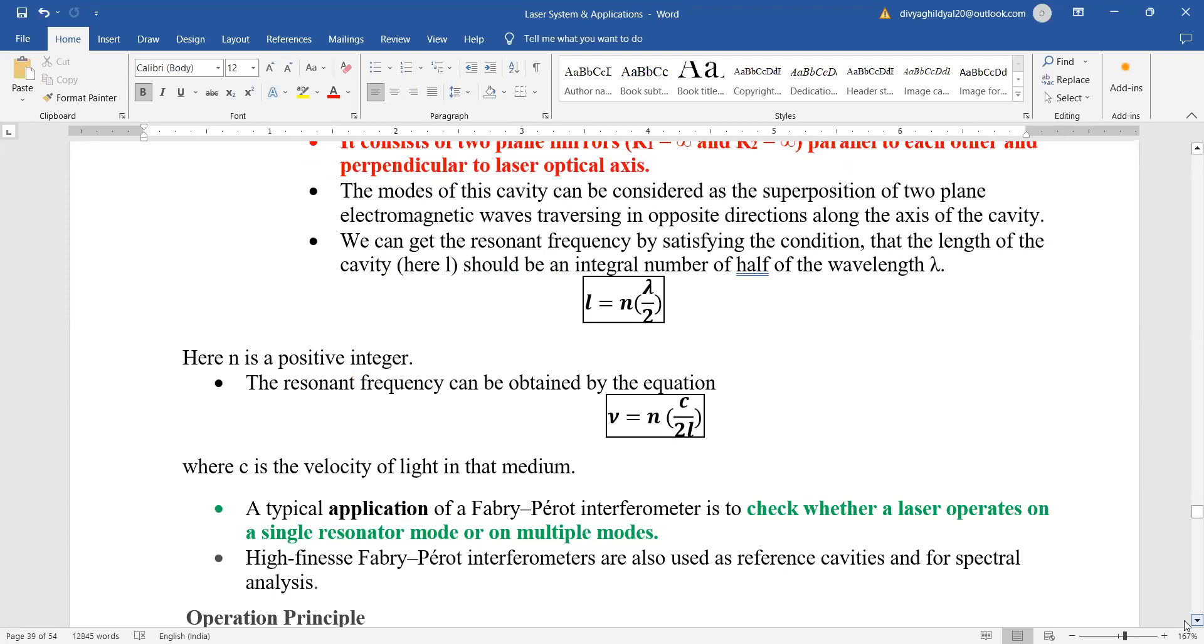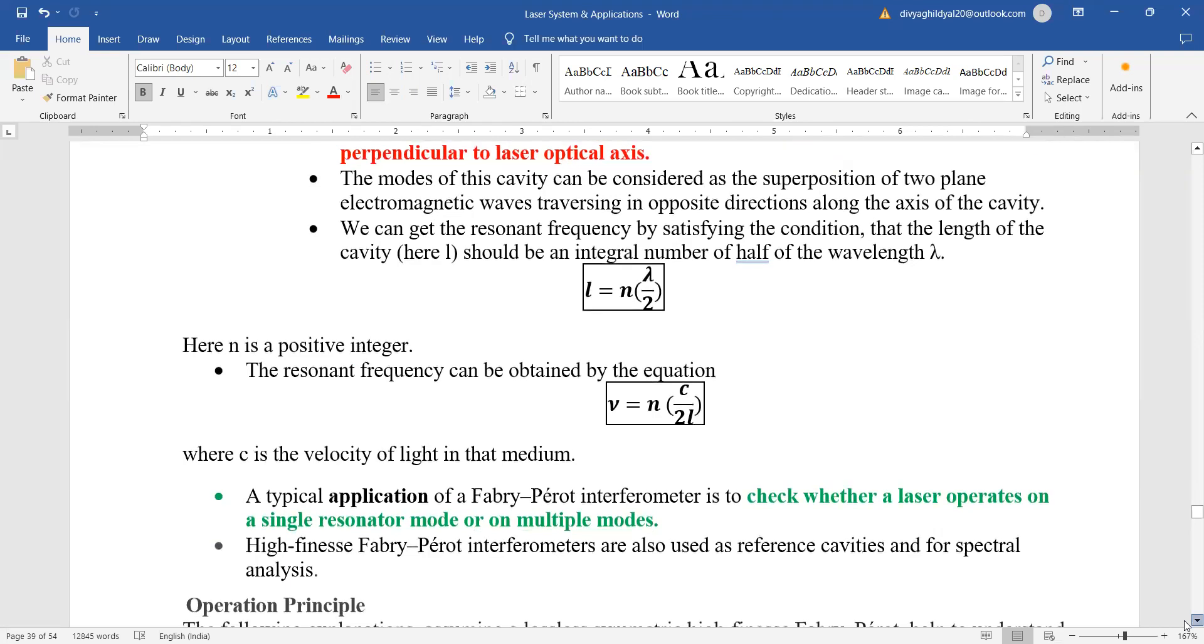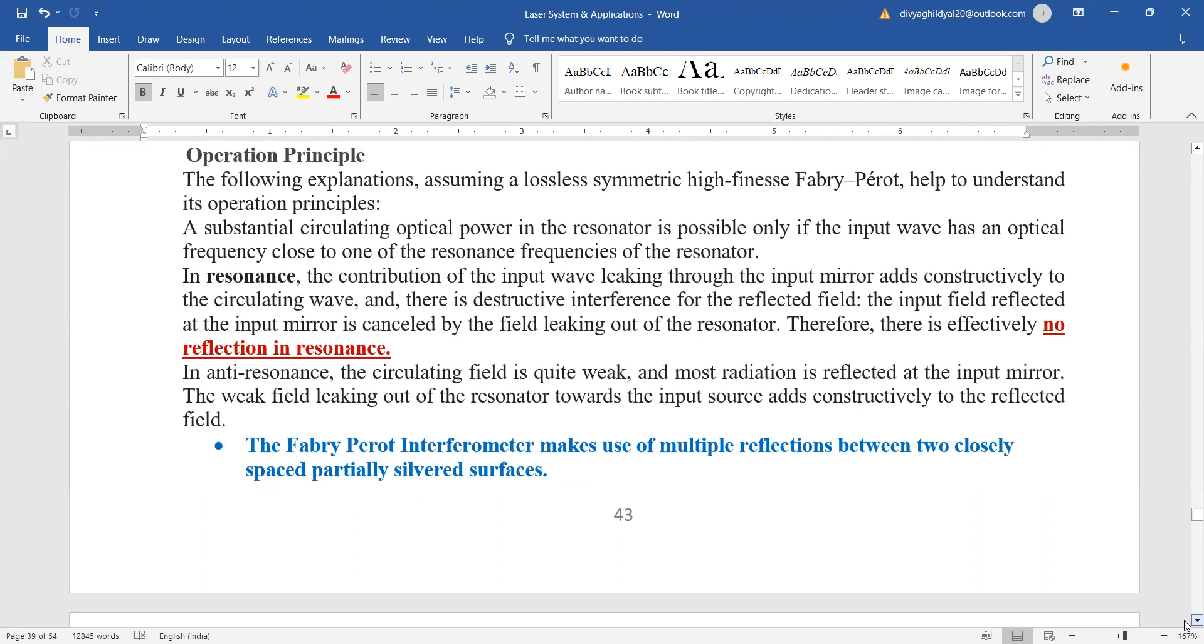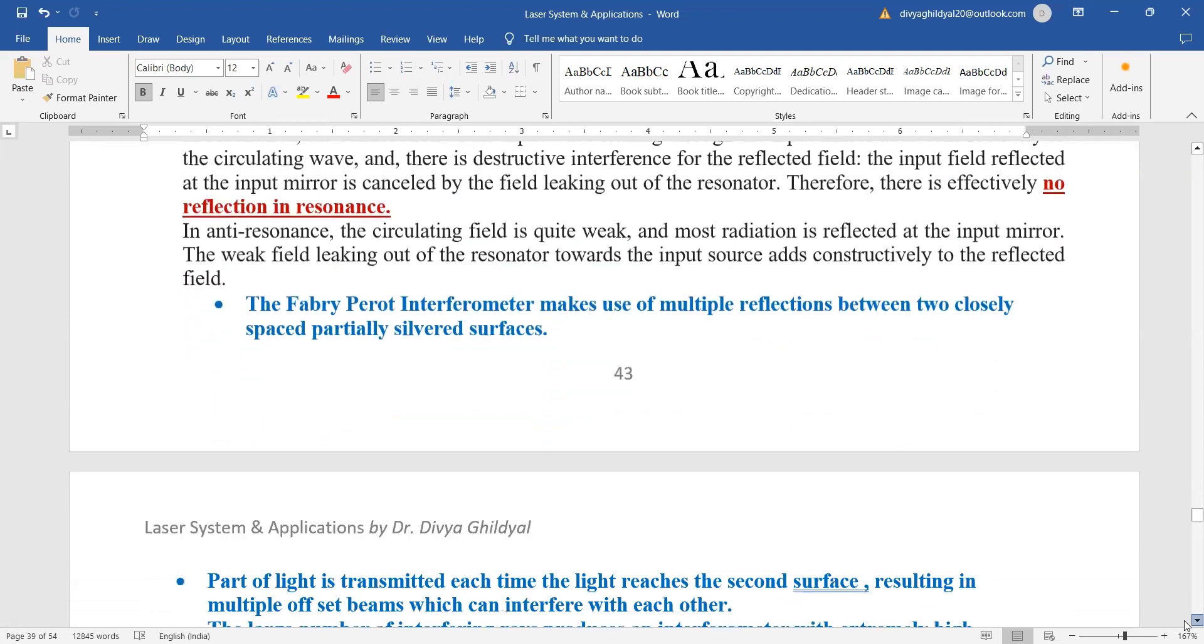Typical application of Fabry-Perot interferometer is to check whether a laser operates on a single resonator mode or on multiple modes. The Fabry-Perot interferometer makes use of multiple reflections between two closely spaced partially silvered surfaces.